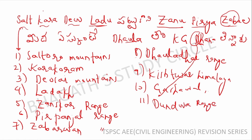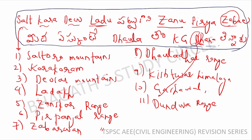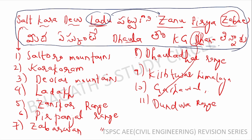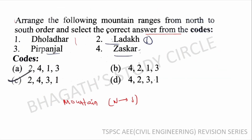Based on this arrangement, the correct order gives us option C: 2-4-3-1. So it is first Saltoro, second Karakoram, third Pir Panjal, fourth Dhauladhar. Option C is the correct answer.